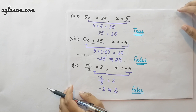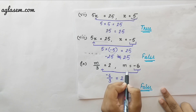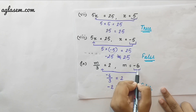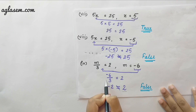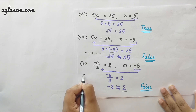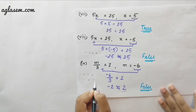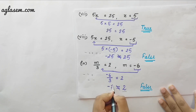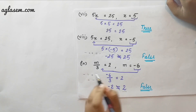The next equation is m by 3 equals to 2, and the value of m is minus 6. We put minus 6 into the equation: minus 6 by 3. A minus sign divided by a plus sign gives a minus sign, so minus 6 by 3 gives minus 2, not 2. Minus 2 is not equal to 2, therefore this value of m does not satisfy the equation.